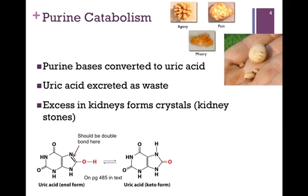Rather than these recycling or salvage pathways, we can also actually catabolize the nitrogenous bases. The pathways differ, however, between purines and pyrimidines. In purine catabolism, remember that those purine bases are the dual ring structures — more complex structures — and it took us several more steps to synthesize the purine bases as compared to the pyrimidines. The purine bases are not entirely catabolized, but simply converted to uric acid.